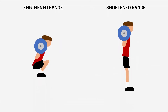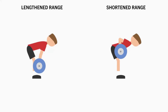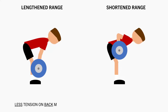For example, a squat is hardest in the bottom half when the quadriceps and glutes are in their most lengthened position, and easiest in the top half when they are most shortened. Whereas most rows are easiest when the arms are far away from the body — when the back muscles are most lengthened — and hardest when the arms are closest to the body, when the back muscles are most shortened.